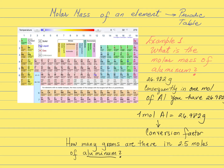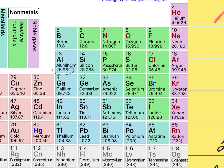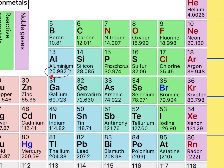We are going to start with one example — an element. You want to find the molar mass of aluminum. Over here you have a picture of the periodic table. You're going to look at the atomic mass of aluminum on the periodic table. The molar mass of an element is the atomic mass expressed in grams, so in one mole of aluminum you're going to find 26.982 grams of aluminum.